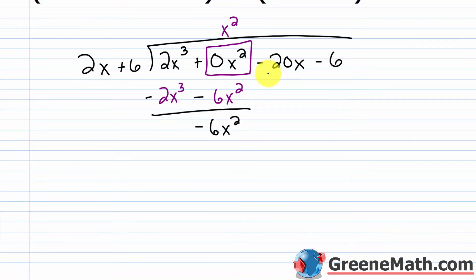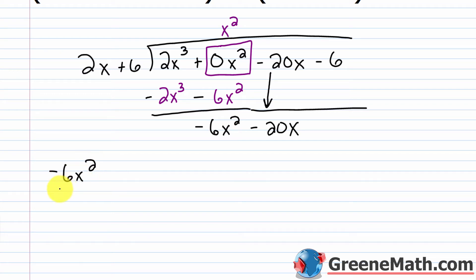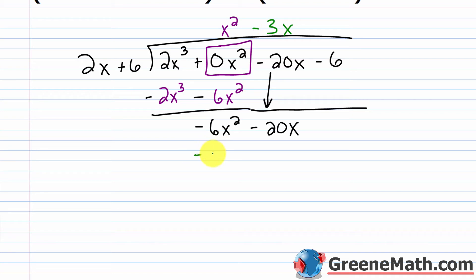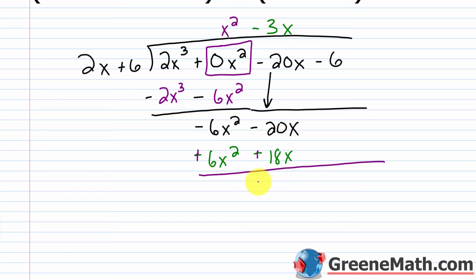Now I bring down the next term, which is negative 20x. Going leading term into leading term: negative 6x squared over 2x — the 6 and 2 cancel giving negative 3, and x squared over x gives x to the first power. So I have minus 3x up top. Multiply: negative 3x times 2x is negative 6x squared, and negative 3x times 6 is negative 18x. Change the signs — so plus and plus. Negative 6x squared plus 6x squared cancels to zero. Negative 20x plus 18x gives me negative 2x.